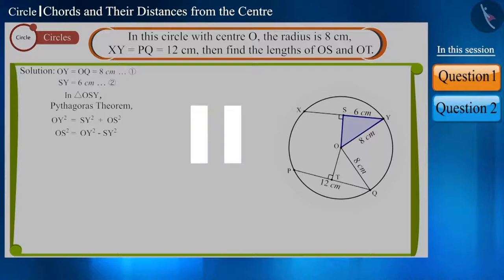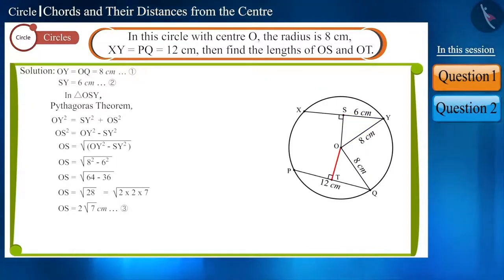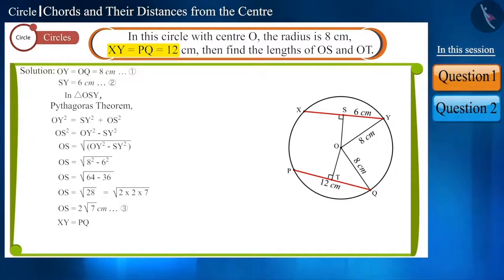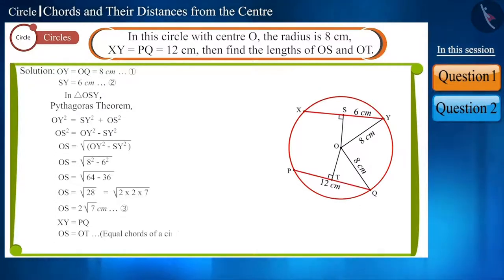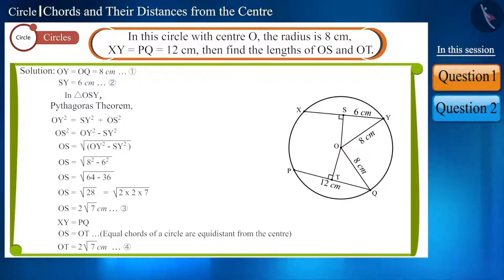Pause the video and try yourself. We obtain the length of OS as 2√7 cm. Now we have to find the length of OT. According to the figure, OT is the perpendicular from the center of the circle to chord PQ. According to the question, XY and PQ are equal chords. We know that equal chords of a circle are at equal distances from the center. Therefore, the length of OT will also be 2√7 cm.